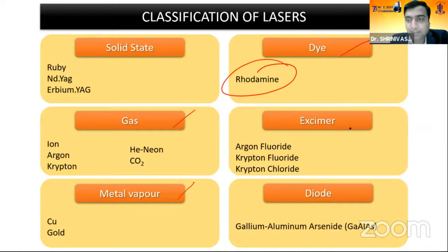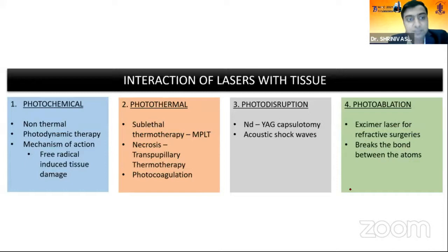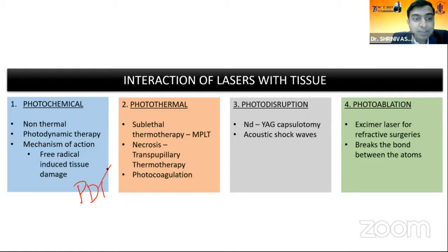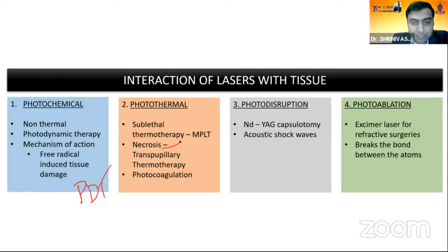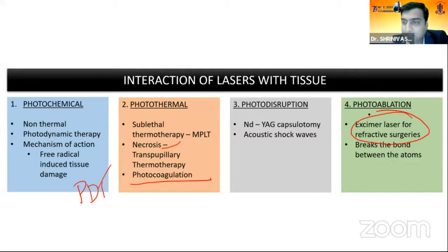Most important is the interaction of lasers with tissue. Photochemical interaction is non-thermal, used in PDT (photodynamic therapy), with free radical-induced tissue damage as the mechanism. Photothermal interaction includes MPLT — the fovea-friendly laser — using short pulse bursts that prevent heat dissipation to surrounding structures. Transpupillary thermotherapy works by necrosis. Photodisruption is used in YAG capsulotomy. Excimer lasers use photoablation, of great interest to refractive surgeons.